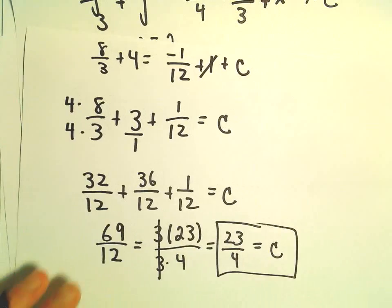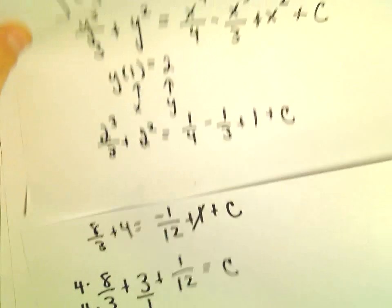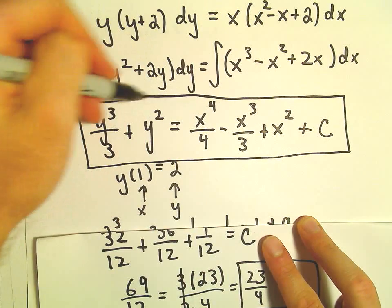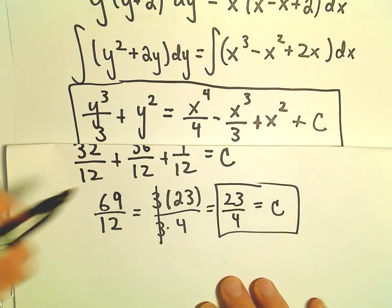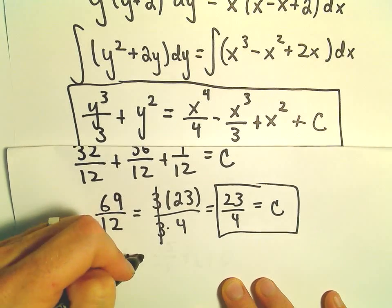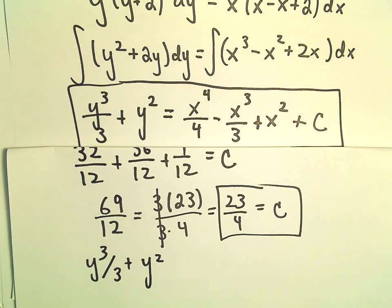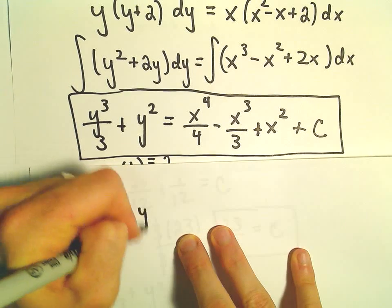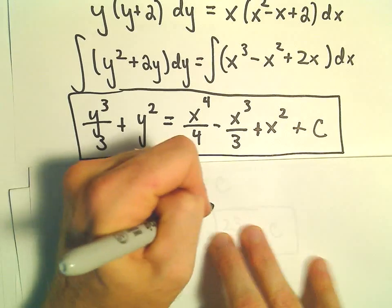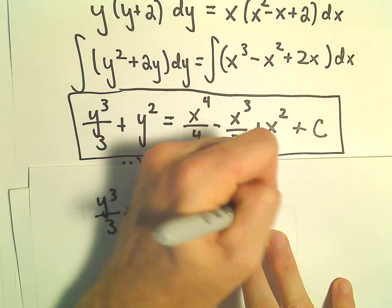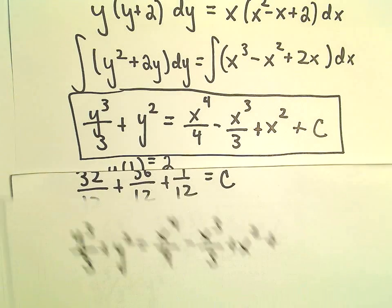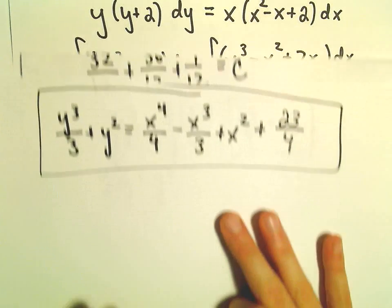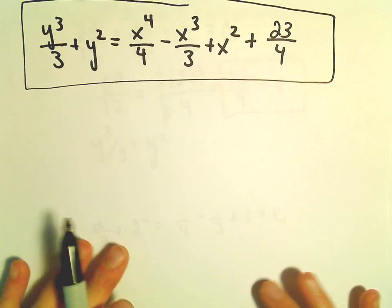It took as much time to find c as it did to actually separate it and integrate it. So, therefore, I would say our particular solution, I'm just going to go back to our general solution, and now I'll just simply plug in our c value. So, y³/3 plus y² equals x⁴/4 minus x³/3 plus x² plus our c value, which we set as 23/4. And again, this is now going to be our particular solution that satisfies that initial differential equation, that original differential equation with that initial condition.